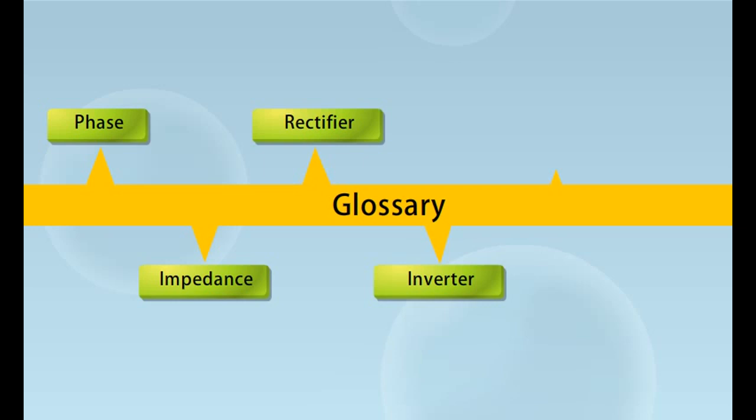Did you know? The first alternator to produce alternating current was a dynamo electric generator based on Michael Faraday's principles, constructed by French instrument maker Hippolite Pixi in 1832. An inductor cannot reduce direct current — it can reduce only alternating current. A capacitor allows alternating current to flow through it but blocks direct current.